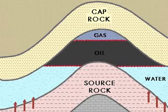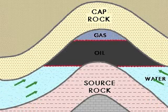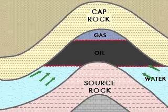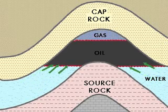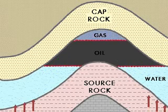Oil gets concentrated into commercial quantities by the process of migration. Migration of oil takes place in two distinct phases known as primary migration and secondary migration.